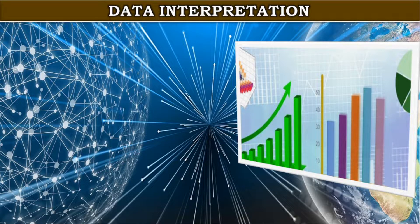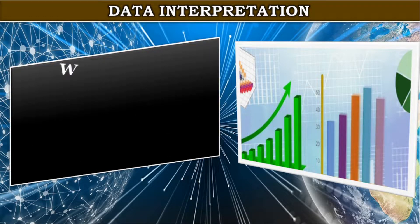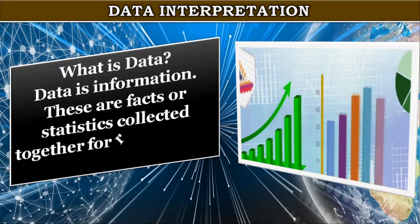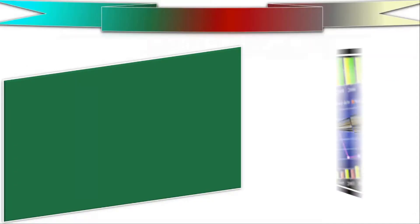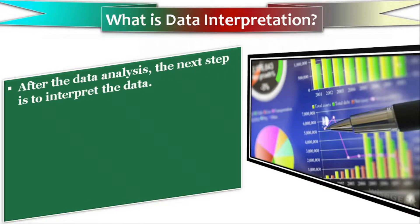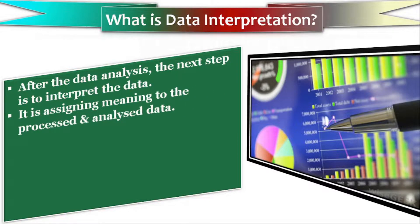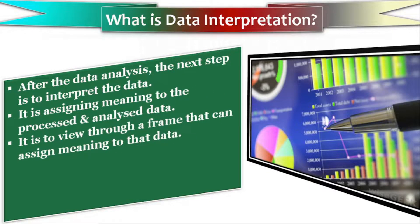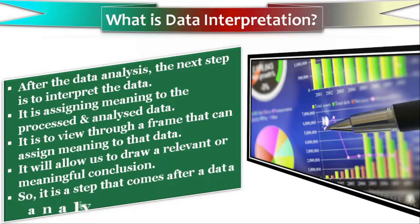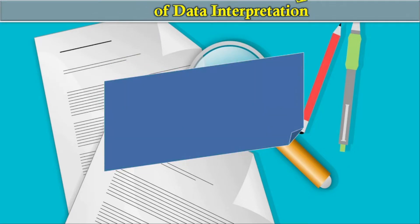When data interpretation comes to mind, the first question is: what is data? Data is information — facts and statistics collected together for reference or analysis. The second question is: what is data interpretation? After data analysis, the next step is to interpret the data. It is assigning meaning to the processed and analyzed data, viewing it through a frame that assigns meaning, allowing us to draw relevant and meaningful conclusions. It is a step that comes after data analysis.